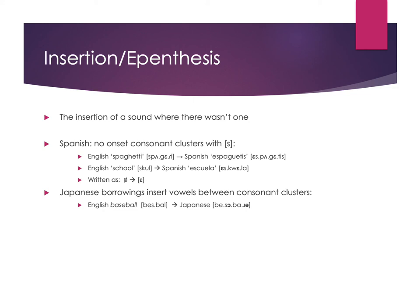Japanese also uses insertion when borrowing words because their syllable structure requires a strict consonant-vowel pattern. When borrowing from English — for example 'baseball' — Japanese adds a vowel after each consonant to fit their required system. So it becomes something like 'beis-u-bo-ru', with additional sound changes turning L into R, but you can see the insertion of vowels to match the syllable structure of Japanese.